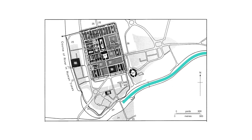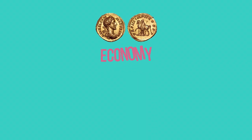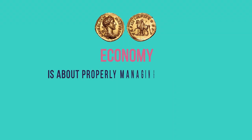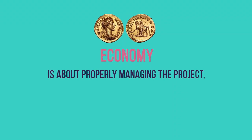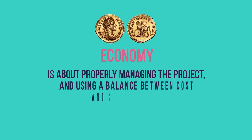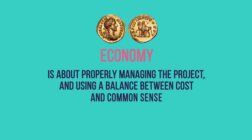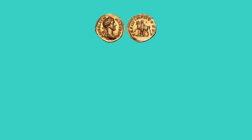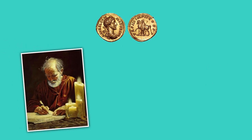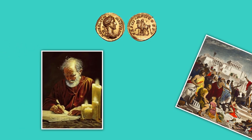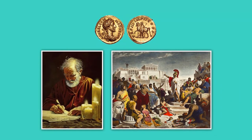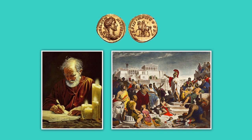This principle asks the architects to understand the usage and the location of their projects. And Economy is about properly managing the project, and using a balance between cost and common sense, where the ordinary home will be different than that of a wealthy man or statesman.